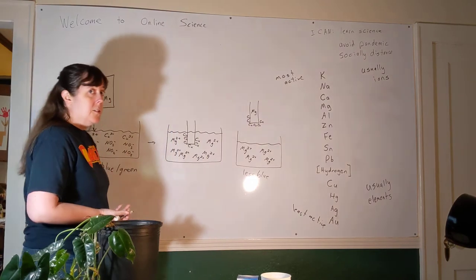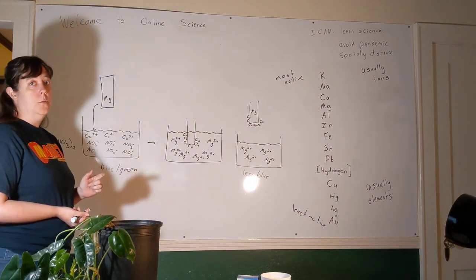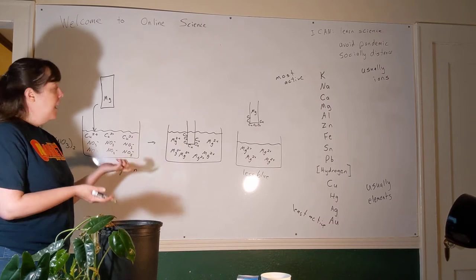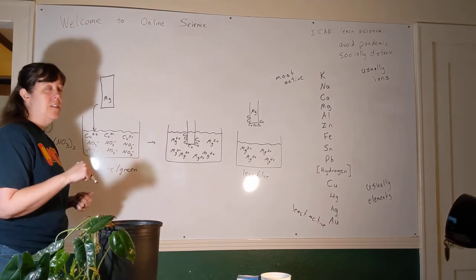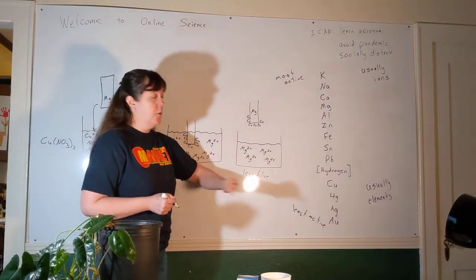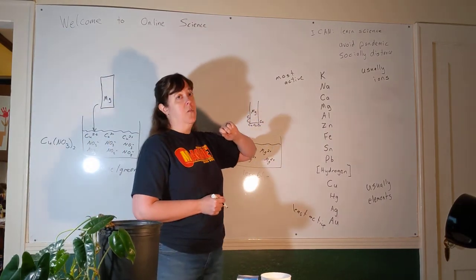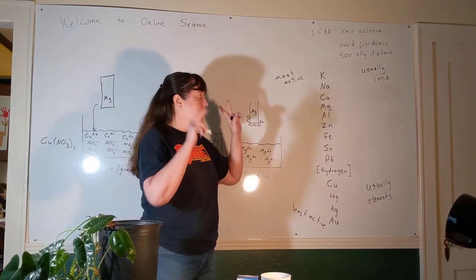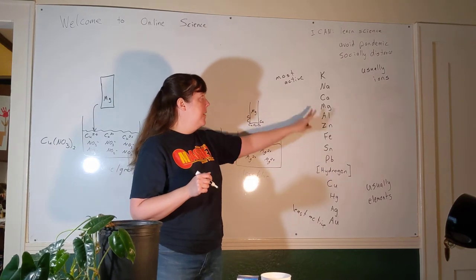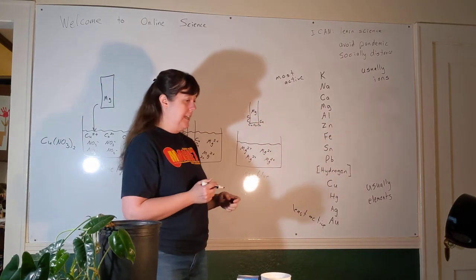Now if I tried to reverse this — if I had a piece of copper and put it into a solution of magnesium nitrate — I would get no reaction, and you should have seen that in the experiment as well. Copper is not a reactive metal and magnesium is, so the normal state for copper is its metallic form and for magnesium its ionic form, and it's going to stay that way.